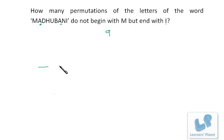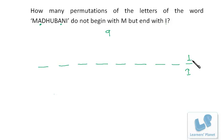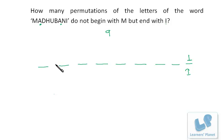We have nine positions. The last position is fixed for I, so we have just one choice there. For the first position, M cannot come. One letter has already gone to the last position, and M cannot be first, so we are left with seven choices.